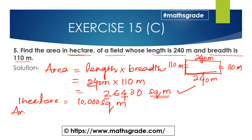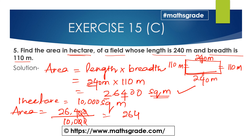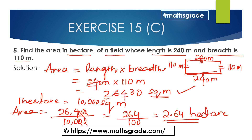Area equals 26,400 divided by 10,000. Cancelling zeros, 26,400 divided by 10,000 gives 2.64. So the area of the rectangular field is 2.64 hectares.